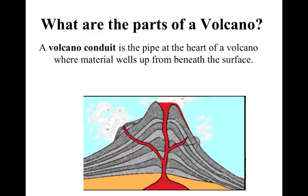Next we have what's called the volcano conduit. This is the pipe at the heart of the volcano where the material comes up from the surface. We have this central pipe of the volcano, which is our magma conduit.